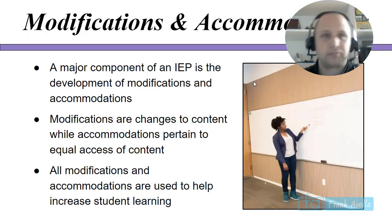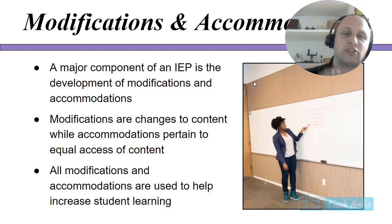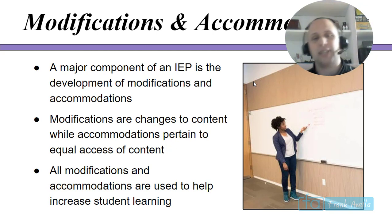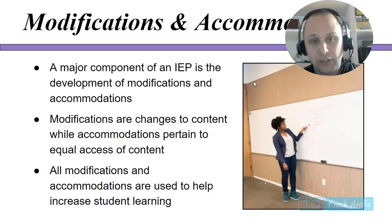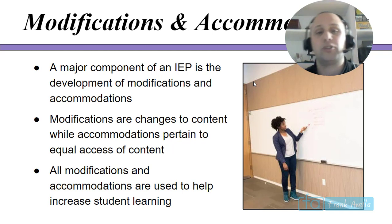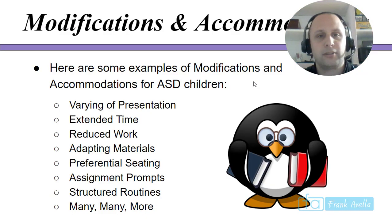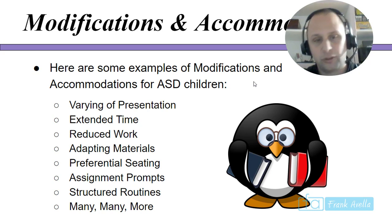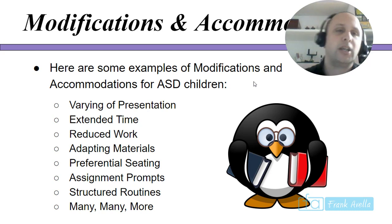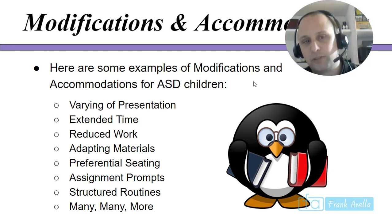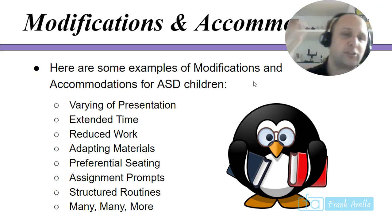A major component of an IEP is development of modifications and accommodations. Modifications are changes to the content, whereas accommodations pertain to access of content — a lot of people get confused with that. Both should be used to increase learning and help the student achieve better in school. Examples of typical modifications and accommodations for ASD children include extended time, varying the presentation, reducing work, adapting materials, preferential seating, assignment prompts, and structured routines.